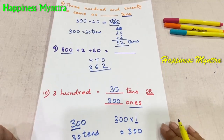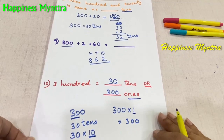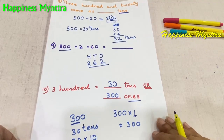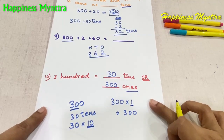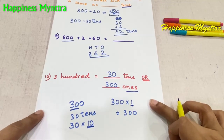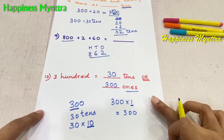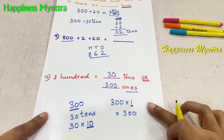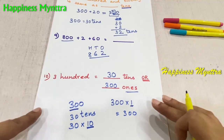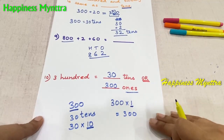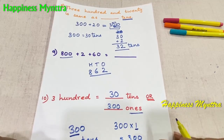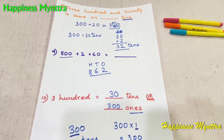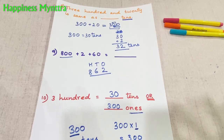Remember: in the concept of place value, this regrouping concept is very essential, and oftentimes children get a little confused by it. So give them a lot of practice in this concept — the other things will just follow. Thank you, happy learning, happy teaching.